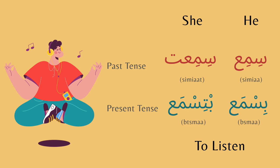The first verb we have is to listen. For he in the past tense you would say sima. For she in the past tense you would say simaat. Moving on to present tense, for he you would say bismar. For she you would say tismar.